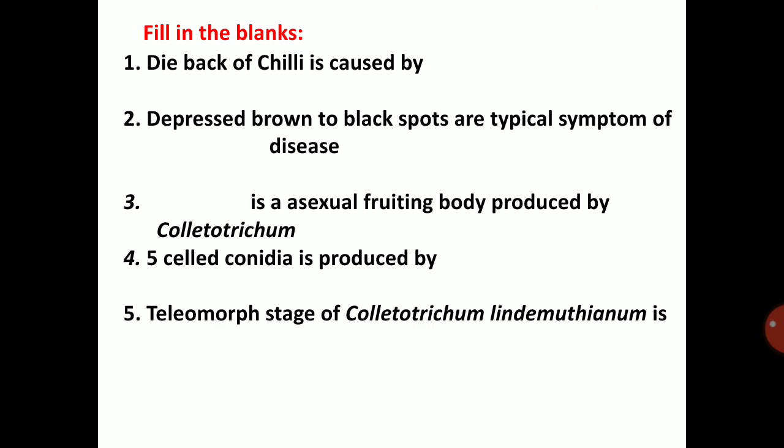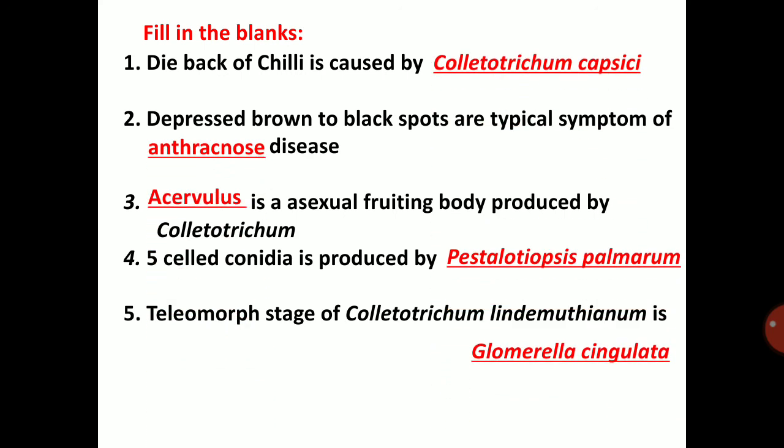This is about Colletotrichum and Pestalotiopsis. Fill in the blanks: Dieback of chilli is caused by — ; depressed brown to black spots are the typical symptom of — disease; — is the asexual fruiting body produced by Colletotrichum. Thank you.